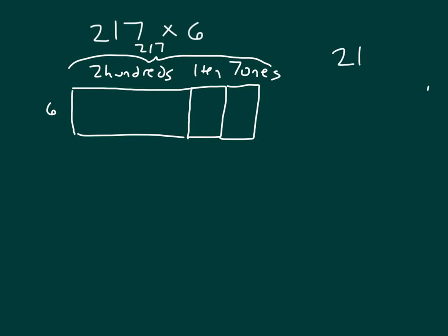Let's write that out with the partial products and we'll see how it is that this fits with that area model. As we had mentioned before, this two is worth two hundreds. So two hundreds times six, two hundreds times six is one thousand two hundred.